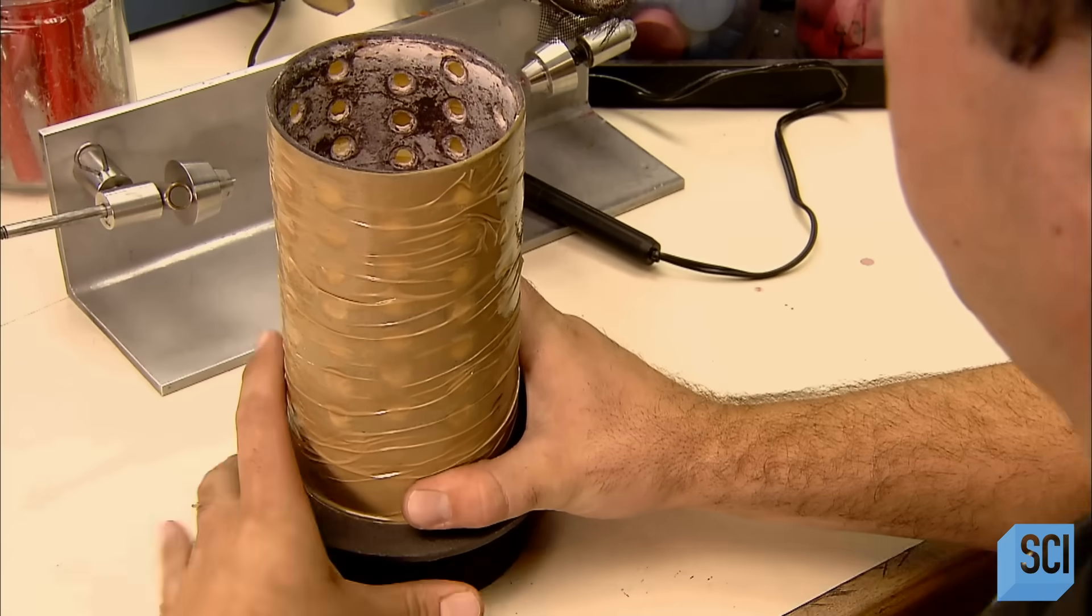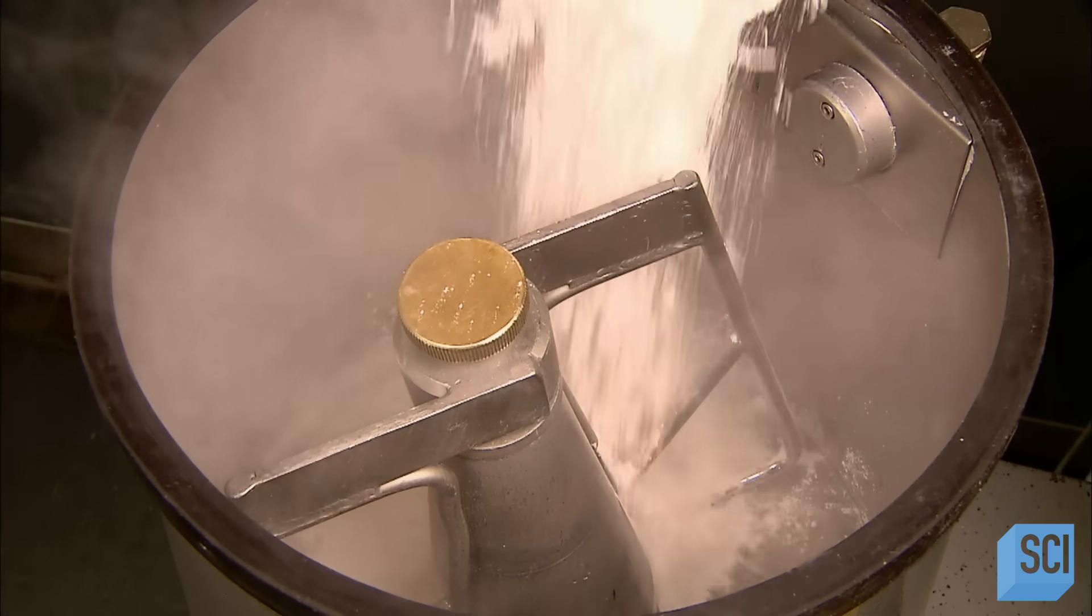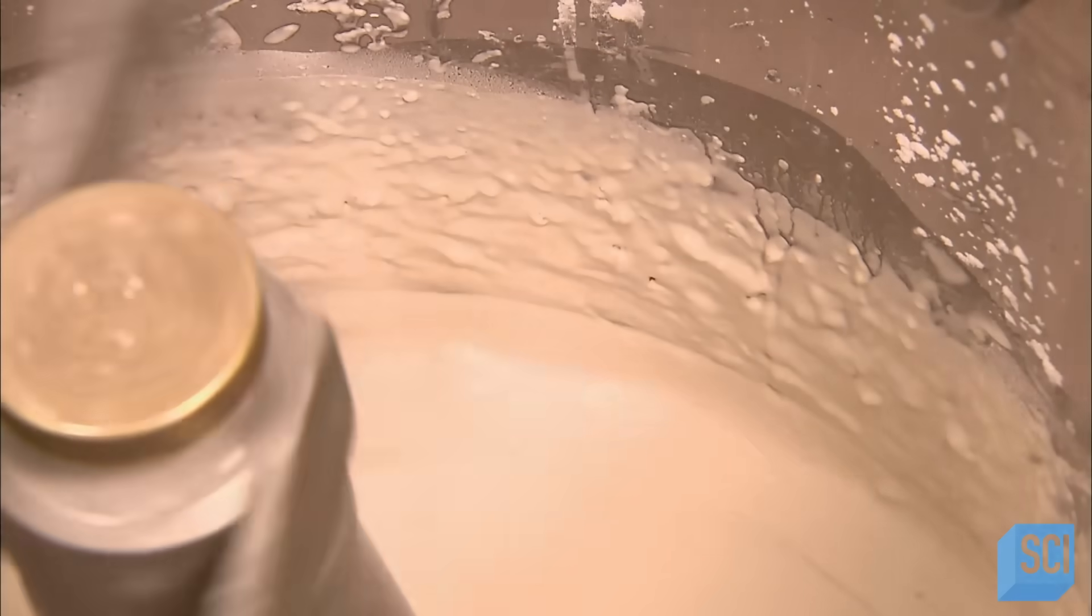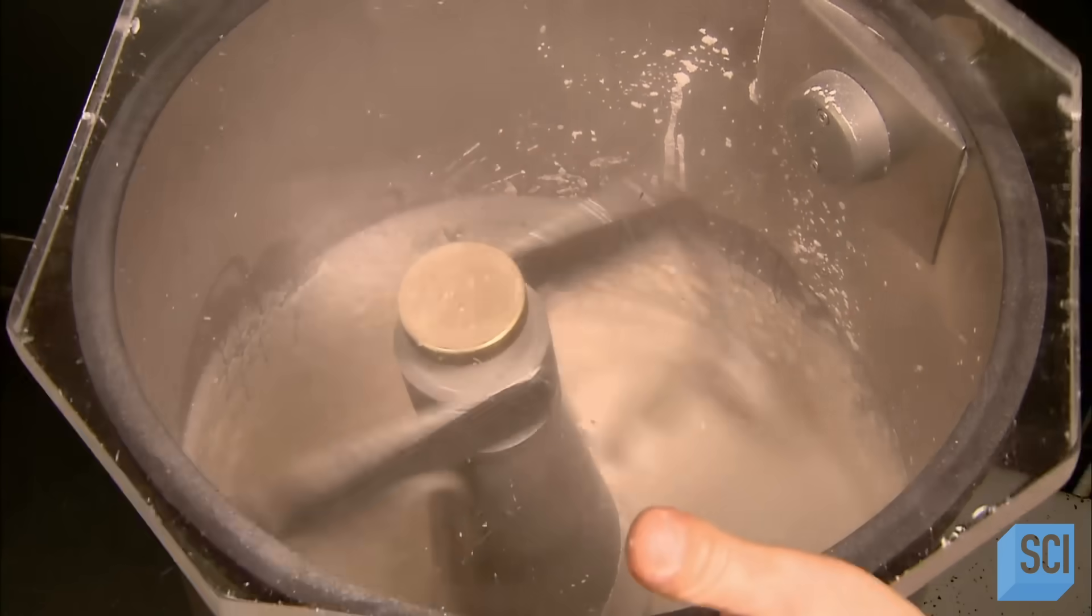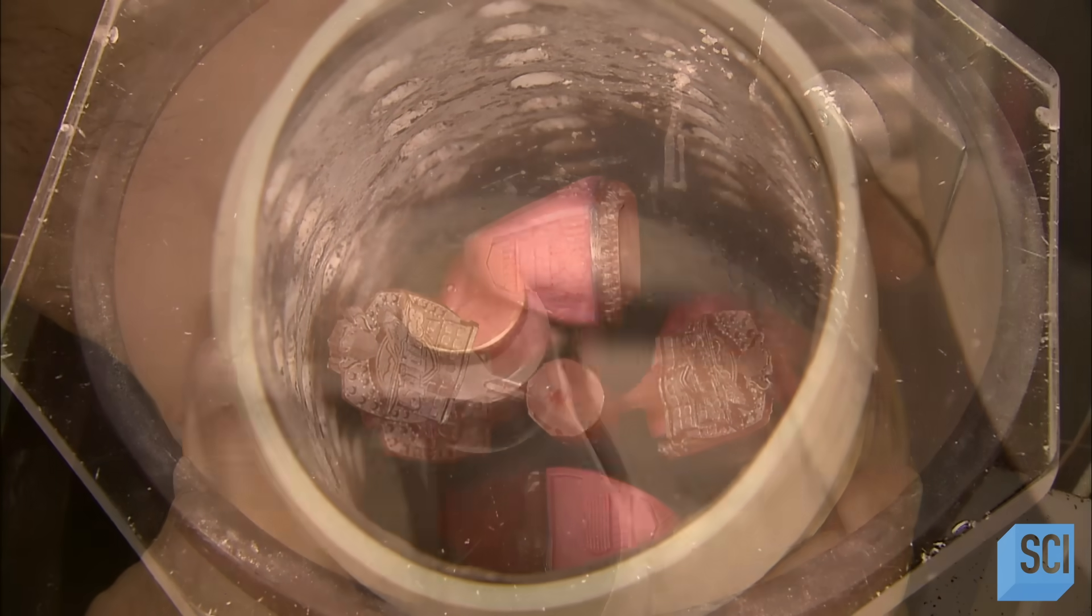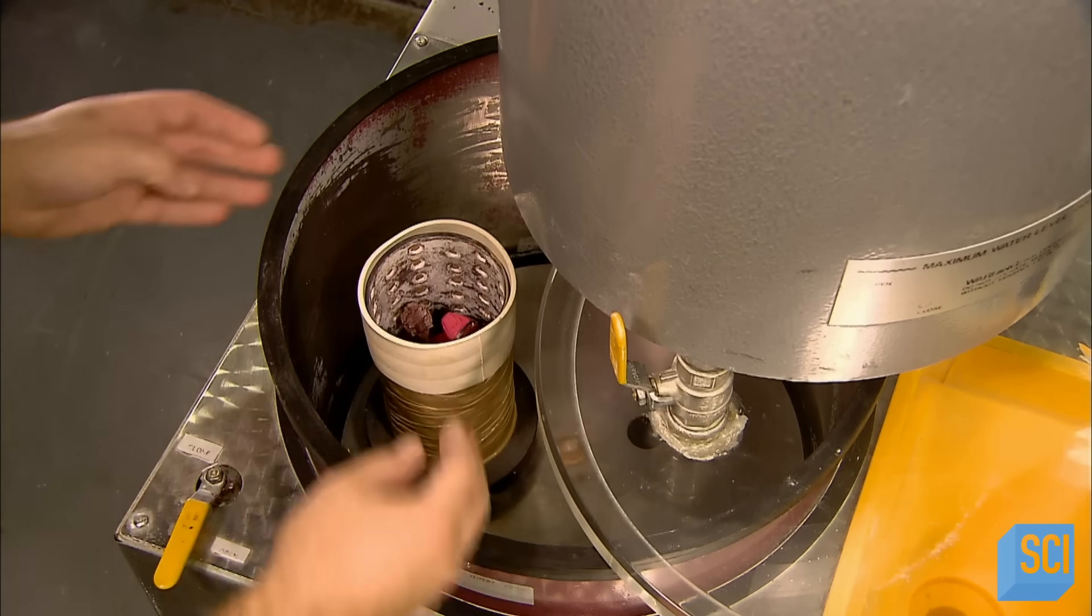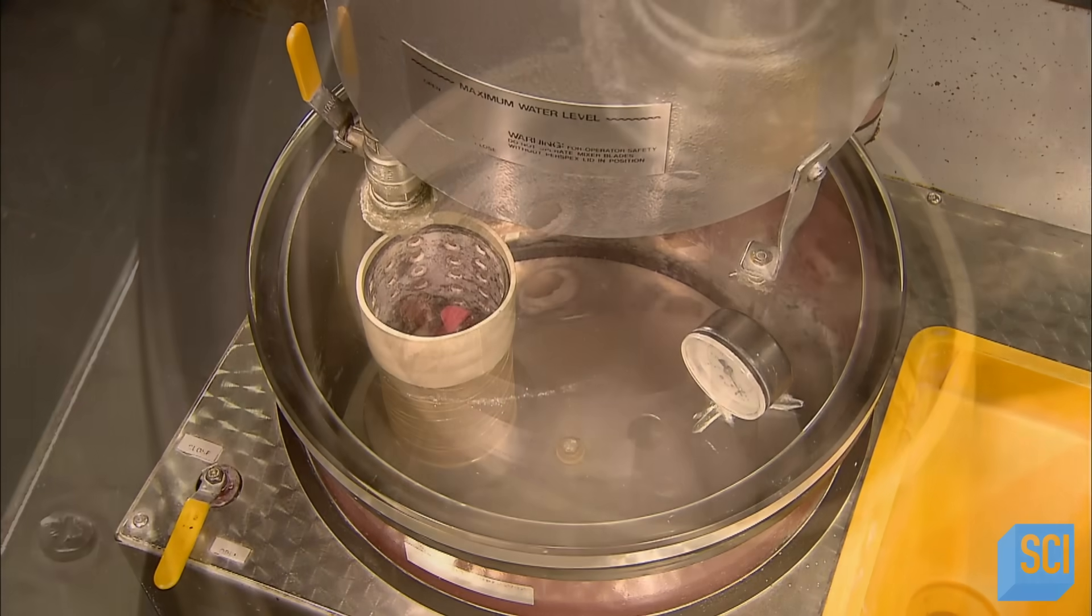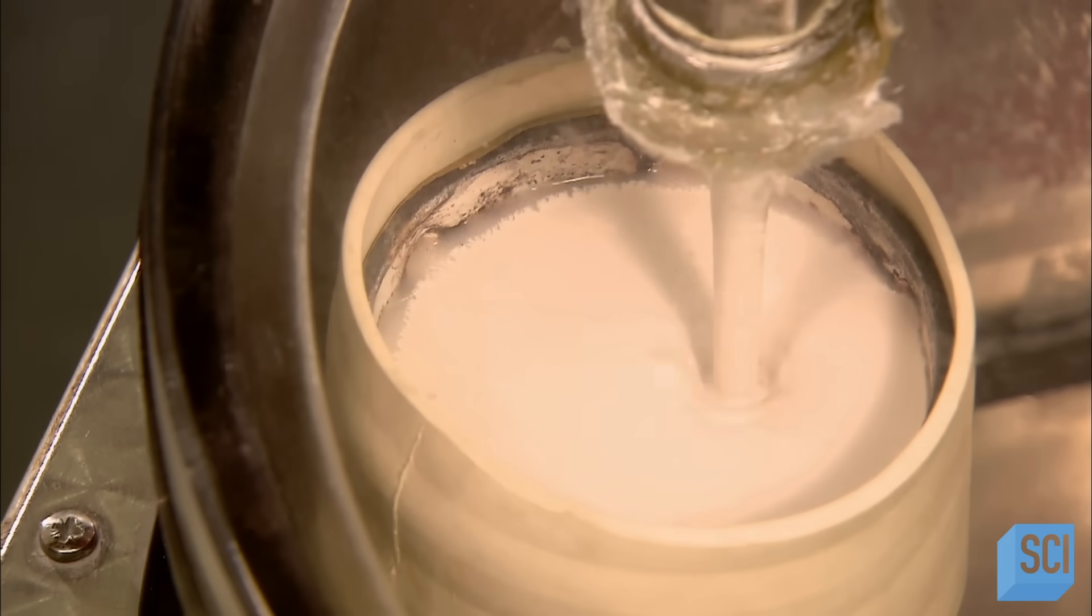They mix up some plaster, blending it for a good half-hour under a vacuum to remove all the air bubbles. They place the wax tree into a metal cylinder and fill it with the plaster mixture. Over the next 12 hours, the plaster hardens into a shell around the wax.